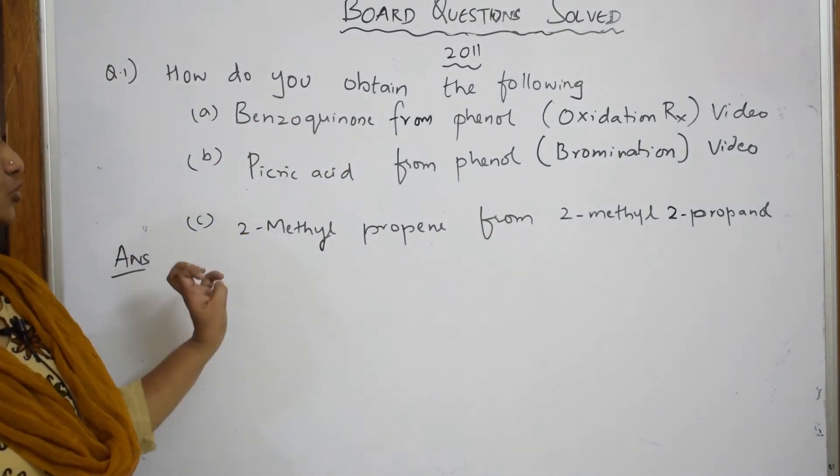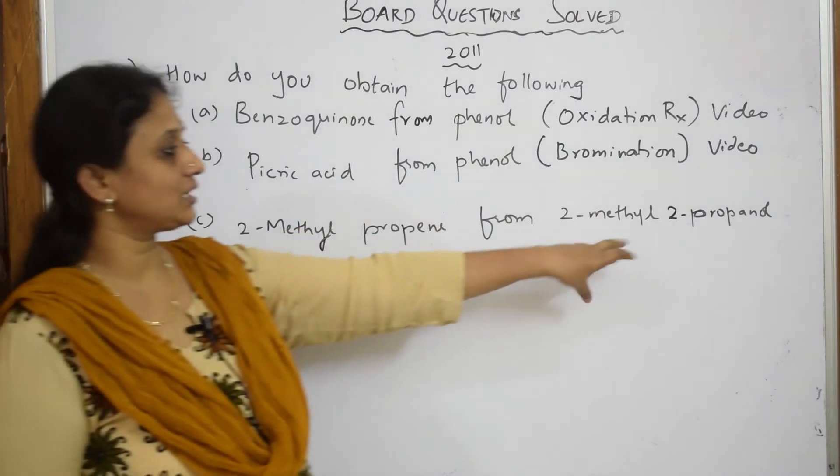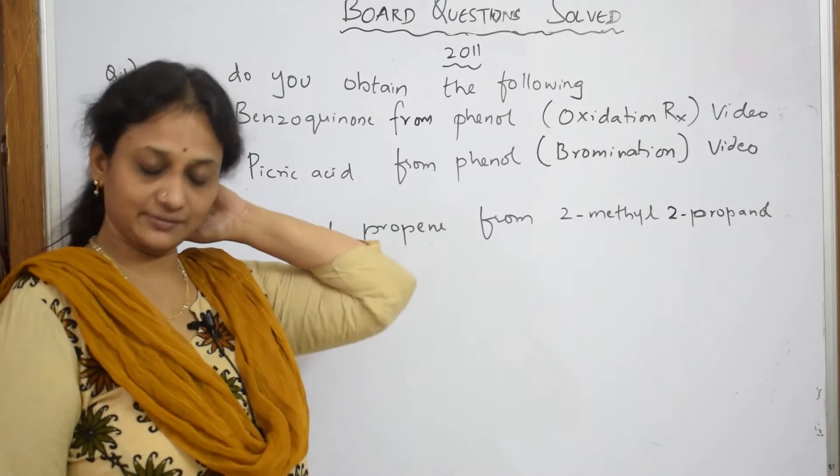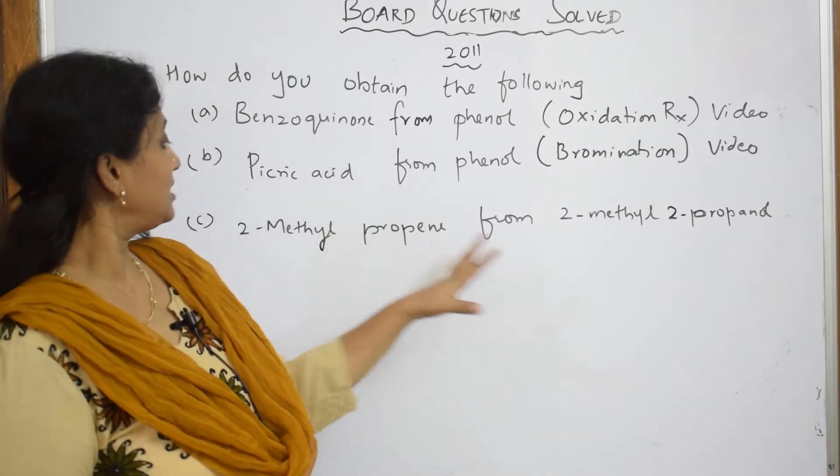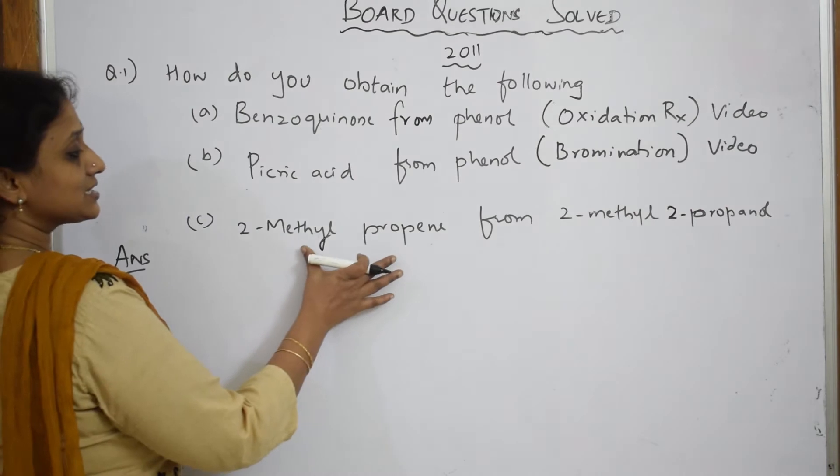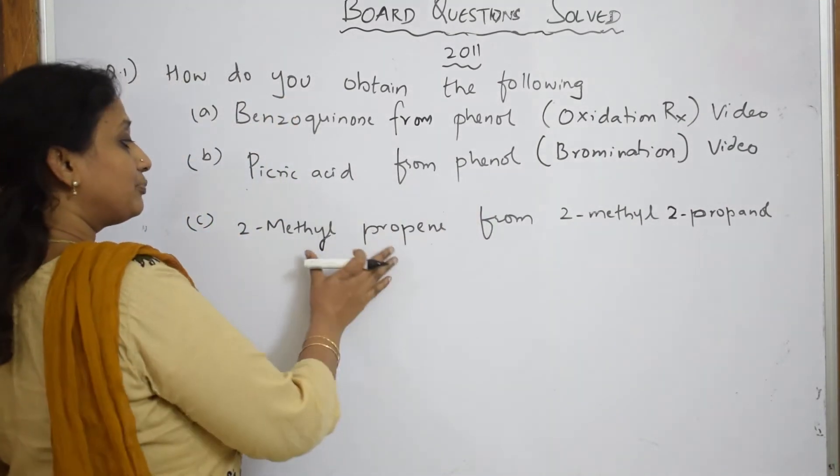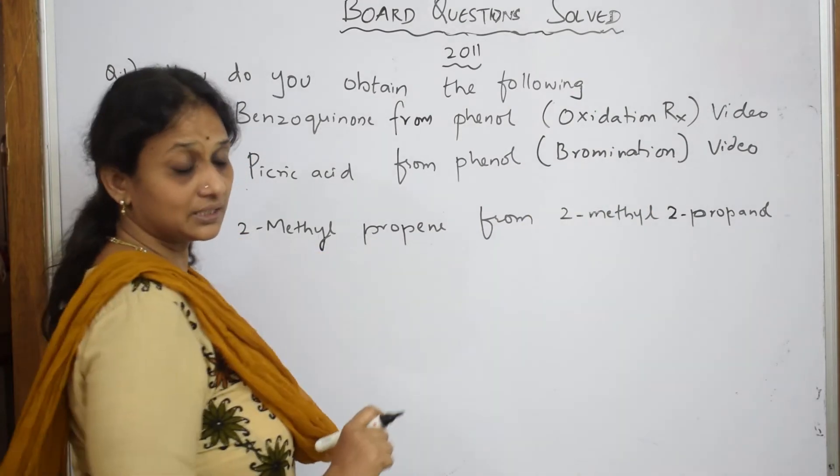Next comes 2-methylpropene from 2-methyl-2-propanol. Now most of the students here get confused. What do they do? Once this question is given to them, they write this as reactant and they write this as product. Wrong. What do they say? I have to prepare this from that compound.